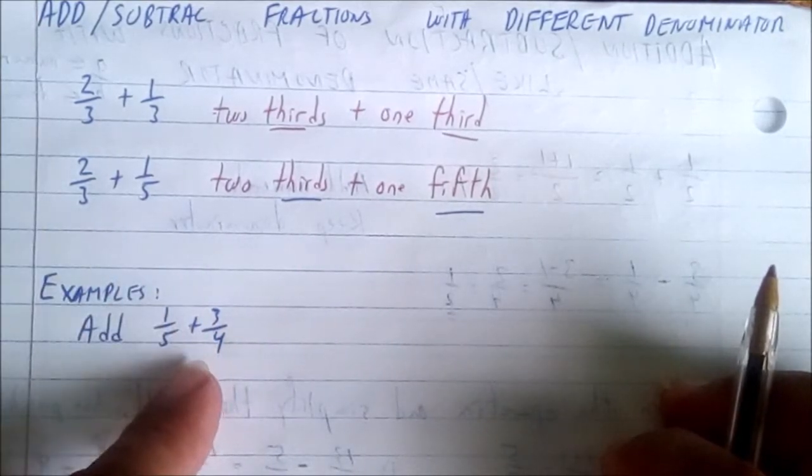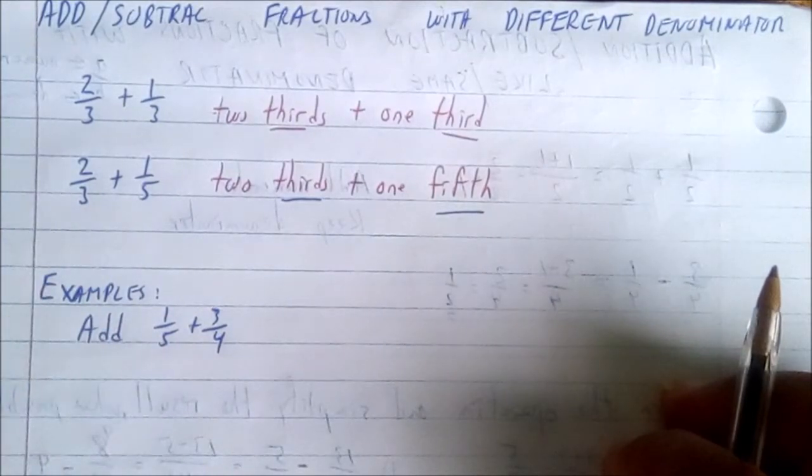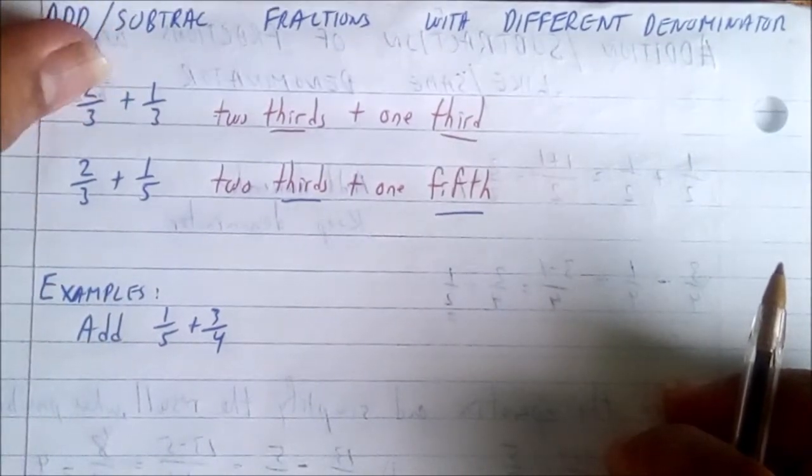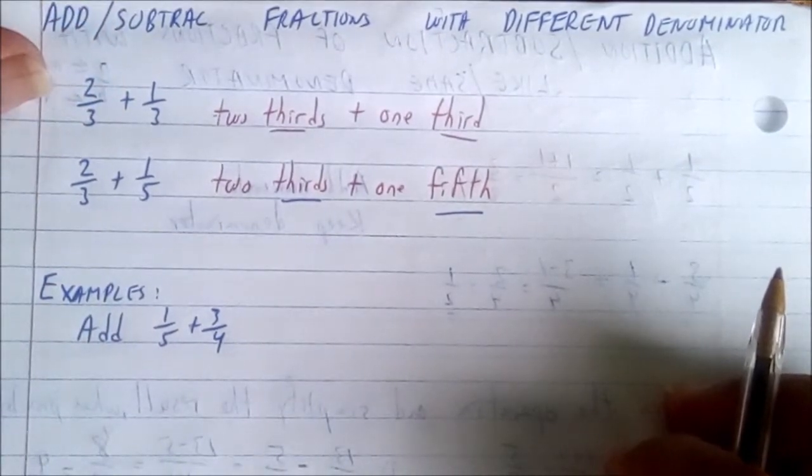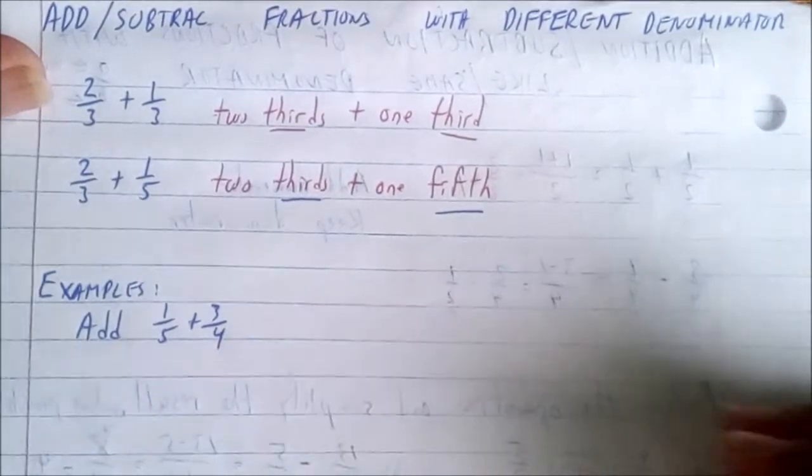Then we will use the rule for adding fractions that have the same denominator. So that's the first thing, get them to have the same denominator so we can add them together.